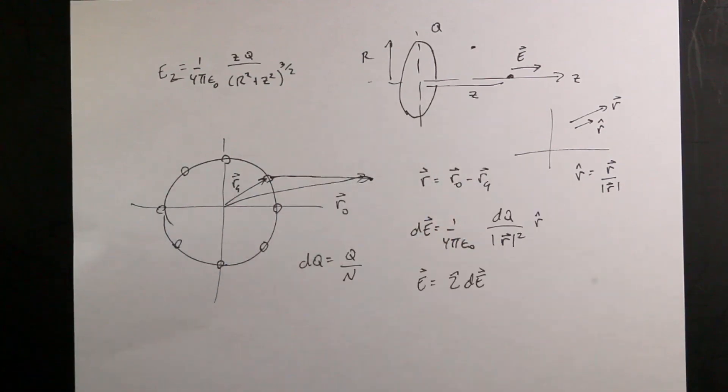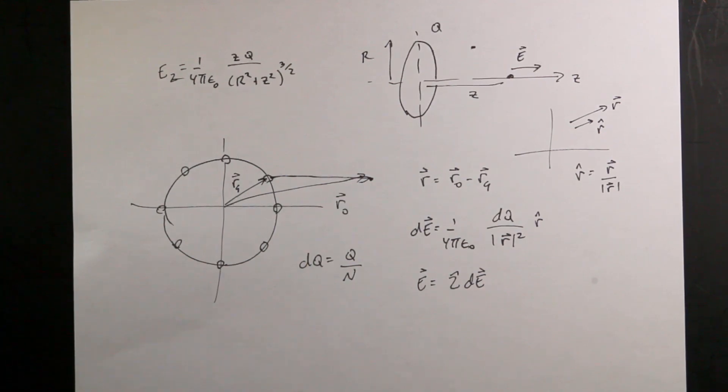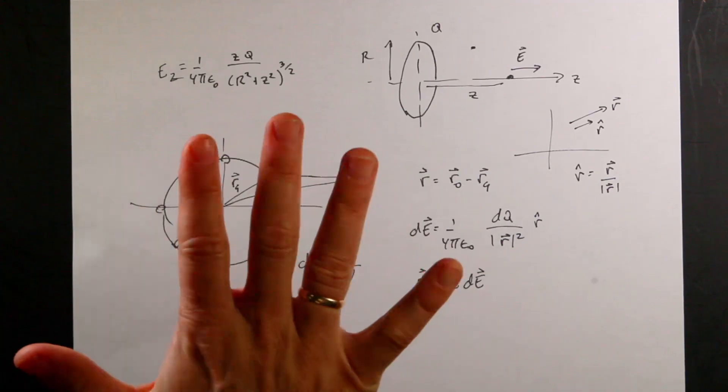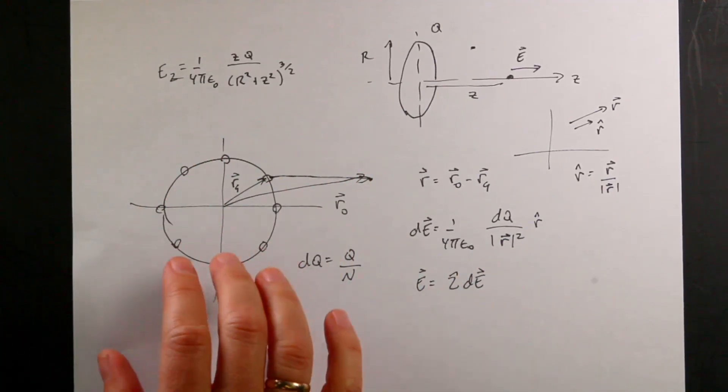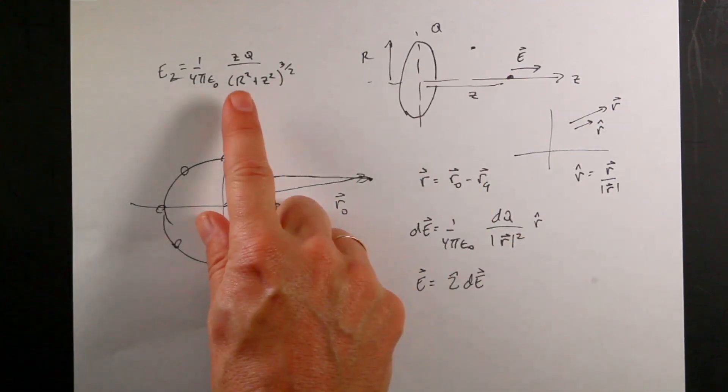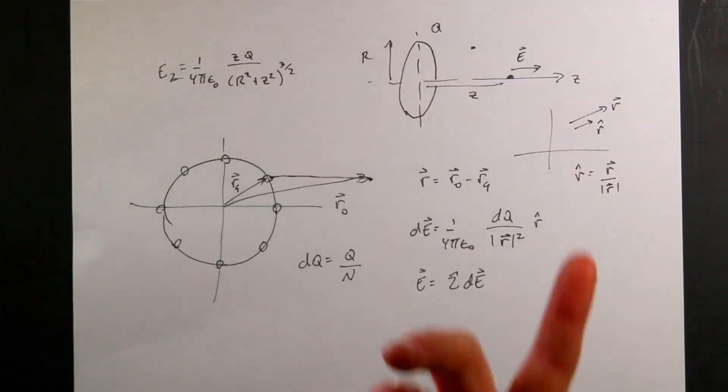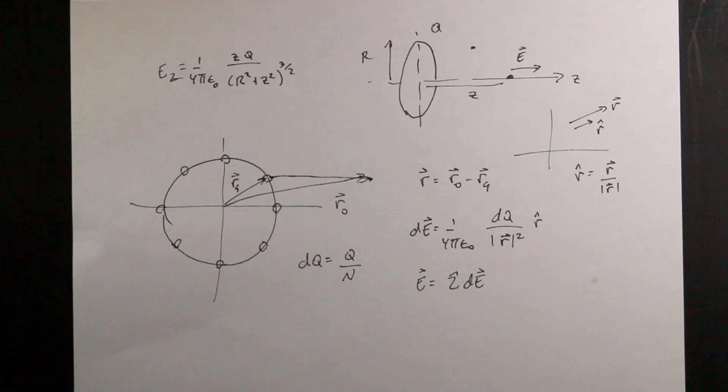This is what we did in calculus. You let the number of pieces go to infinity such that the piece size goes to zero, and that's why it becomes an integral. But we're not going to do an integral, we're going to do a finite sum. The more pieces we break this into, the better. So let's do this. It's going to be fun.